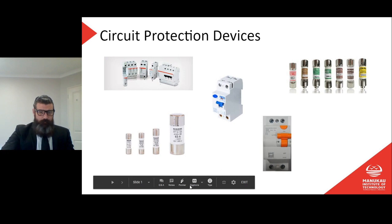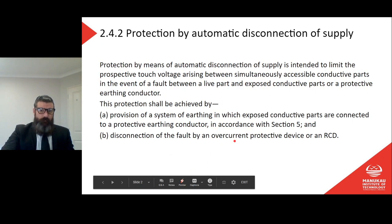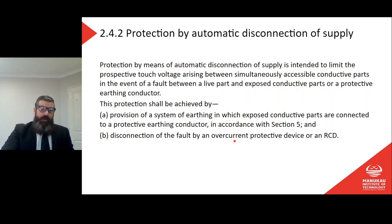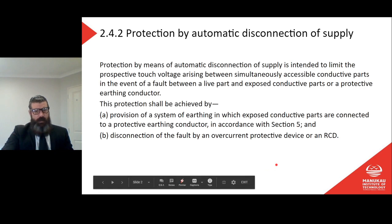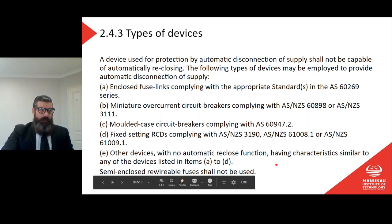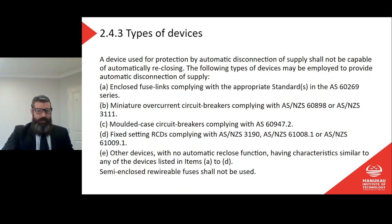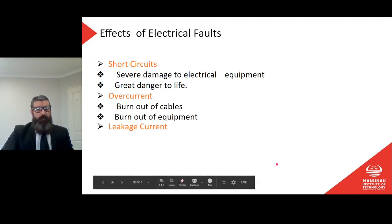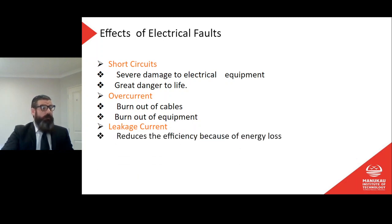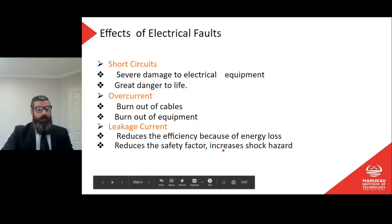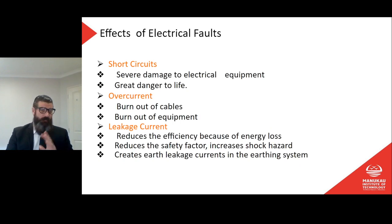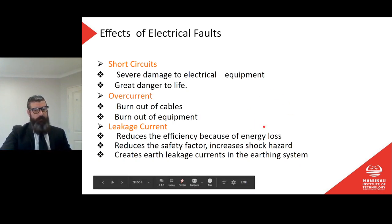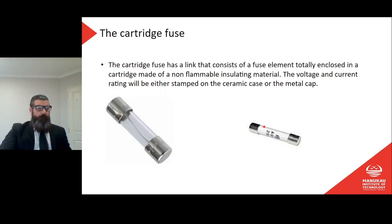Let's get straight into it. This was from AS/NZS 3000 paragraph 2.4.2 — we covered this in the last one. Paragraph 2.4.3 of AS/NZS 3000 — we covered this one in the last video as well. Here we have the effects of electrical faults — the sorts of things that can happen when we have electrical faults and high current faults. We covered this in the last video; pause and have a read if you need to.